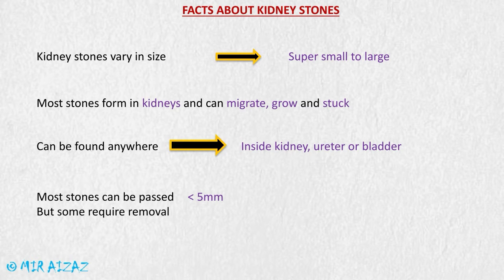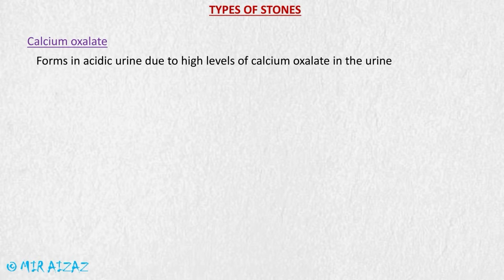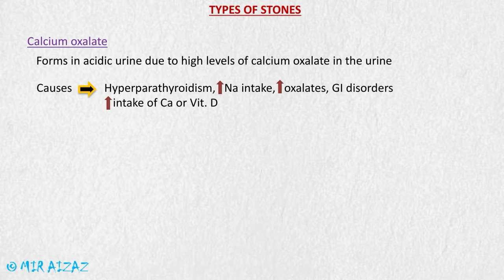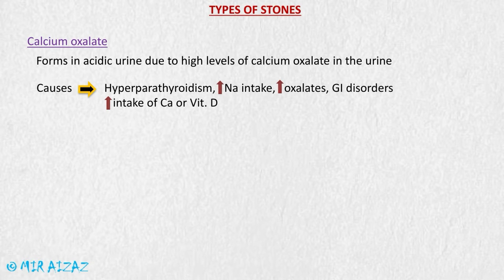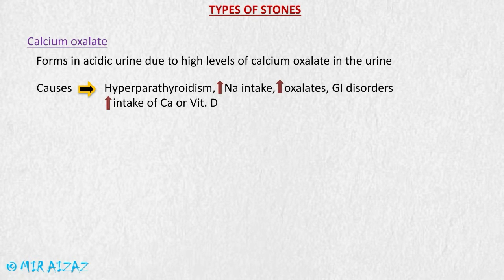The first type is calcium oxalate stones, which form in acidic urine due to high levels of calcium oxalate. Causes include hyperparathyroidism, where excess calcium is removed from the bones, raising blood calcium and urinary calcium levels. Excessive sodium intake prevents calcium reabsorption, increasing urinary calcium concentration. Other causes include excessive oxalates, gastrointestinal disorders that interfere with mineral absorption, and excess intake of calcium or vitamin D.